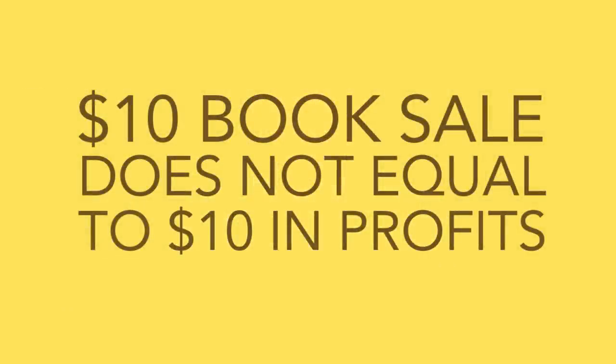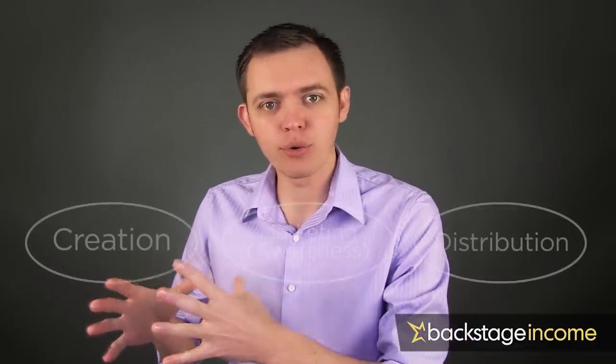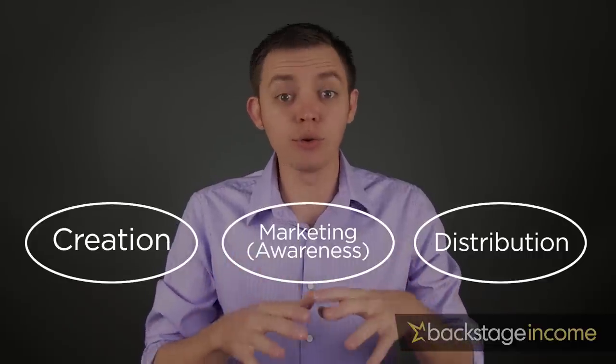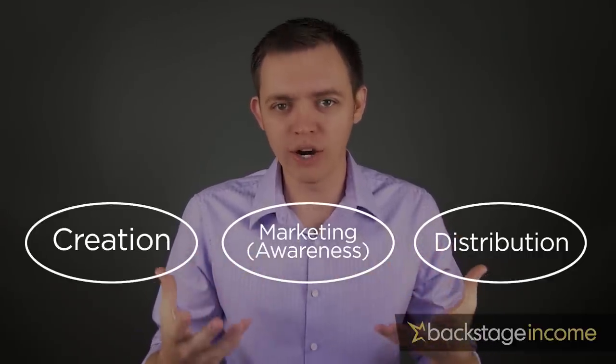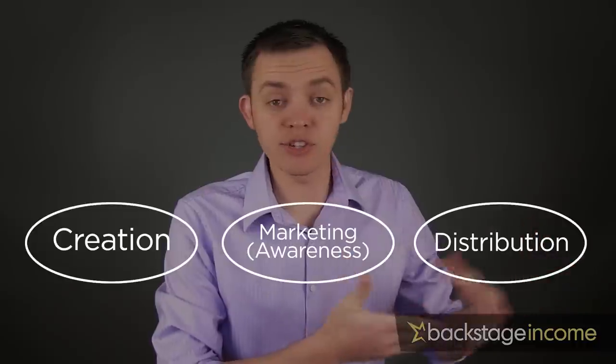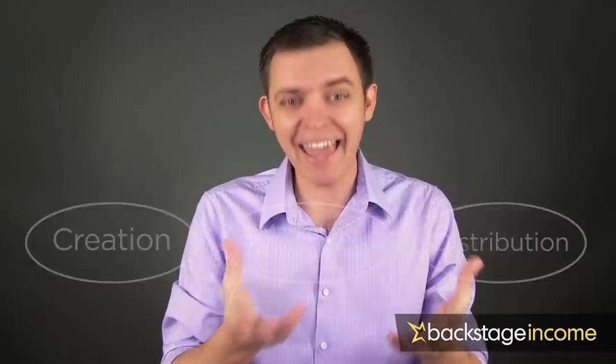If you've written a book in the past, you probably realize that a $10 book sale does not equate to $10 in profits. That is because it takes a lot of different components to get to that end sale. For example, if you're selling a $10 book, you first go through the creation stage, then the marketing stage or bringing awareness to your book, and then the distribution stage to the point where it actually gets delivered into the hands of your buyers.